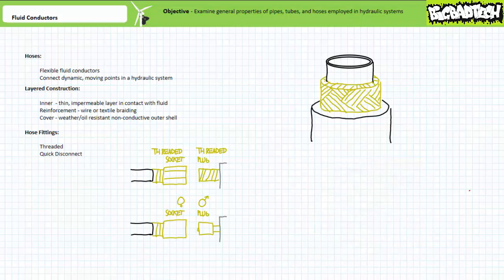Threaded connections, as the name implies, necessitate a technician use a wrench to attach the hose to a piece of equipment. Hoses making use of threaded connections are customarily employed for semi-permanent installations, where disassembly is a rare occurrence.